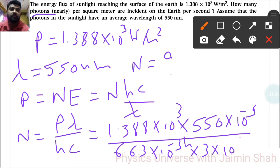So 1.388 times 550 divided by 6.63 divided by 3. That is N = 38.38 × 10 to the (3 - 9 + 34 - 8), which equals 10²⁰.